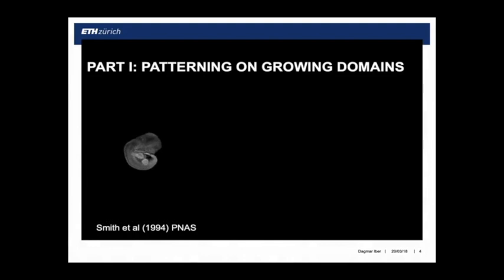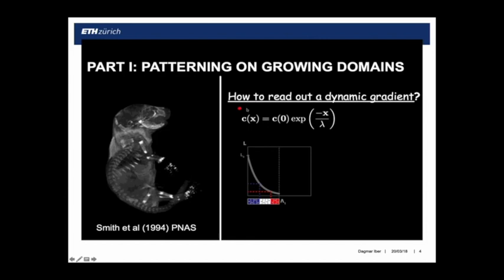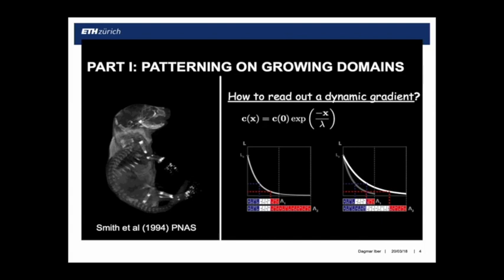The first question we basically asked is how can you pattern a growing domain? As Arthur just pointed out, you have a fundamental problem. If you take the French flag model and you have a gradient, you would be specifying your domains accordingly. But if you're now growing and you keep the gradient shape the same, you would just enlarge the final domain, but you would not get proportional patterning. Some mechanism would have to exist to push out that gradient proportional to the growth of the domain.